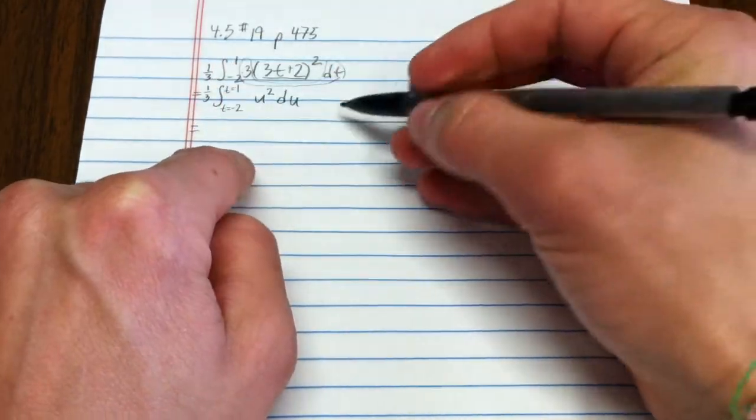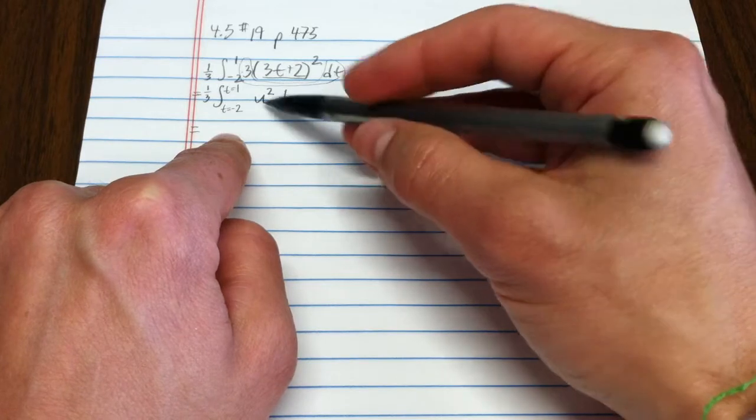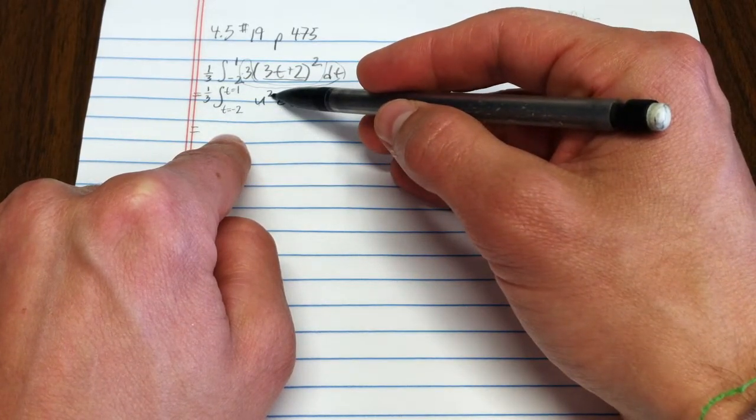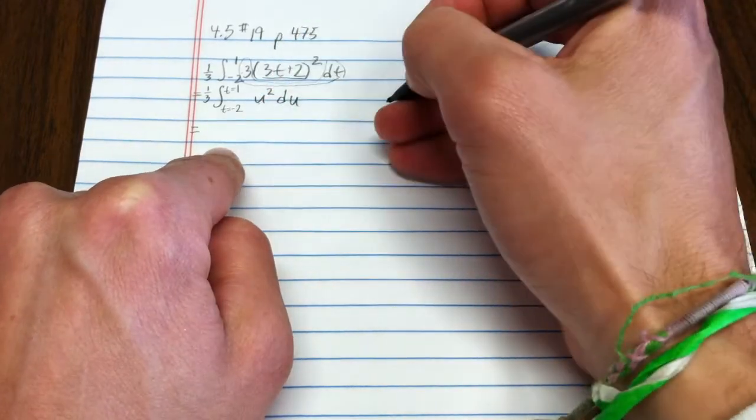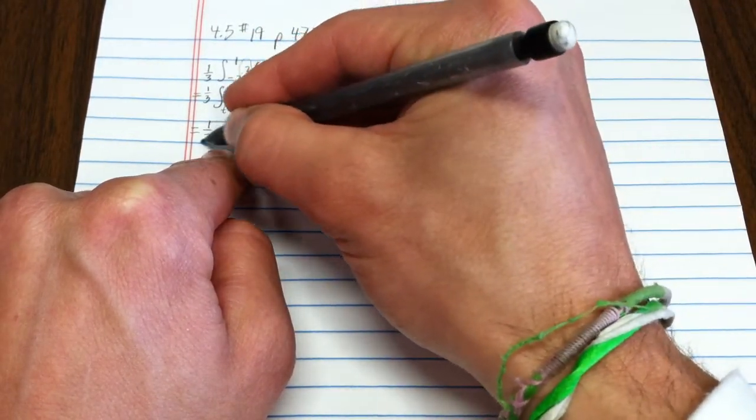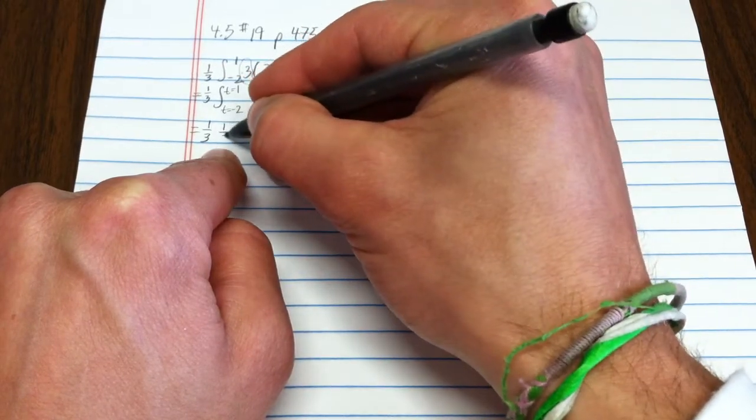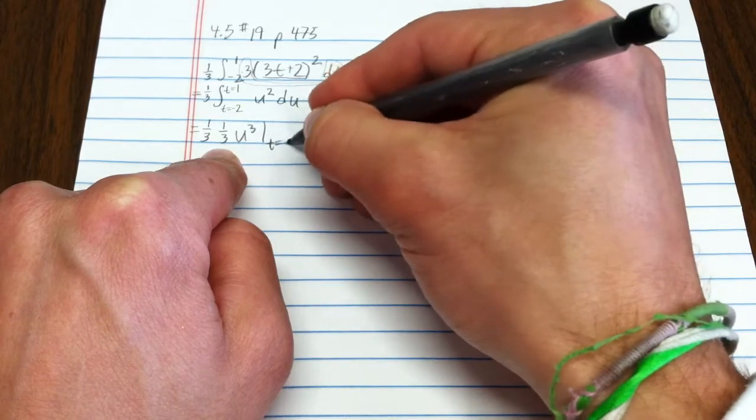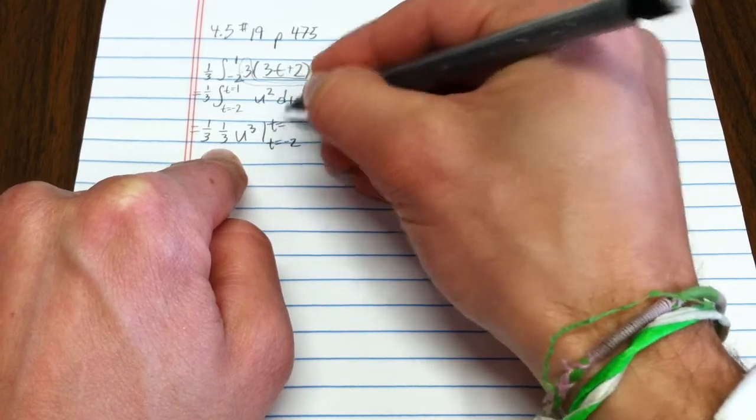What is the integral of u squared? It is 1 third u cubed, so I'll leave that 1 third. The integral of this is another 1 third u cubed, evaluated from t equal negative 2 to t equals 1. Now, here's the issue.